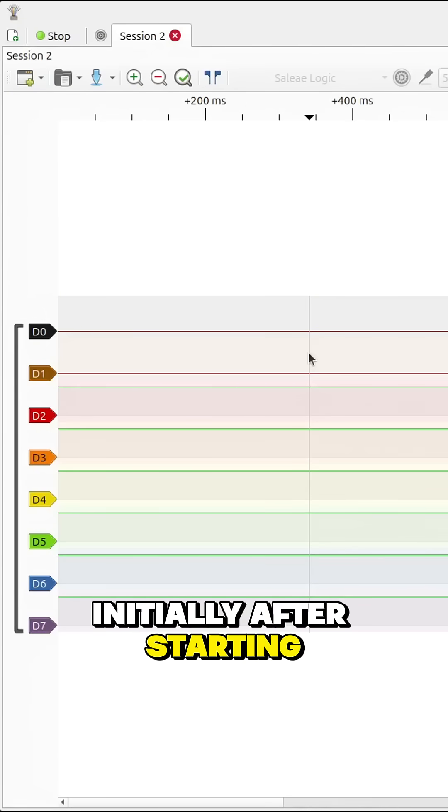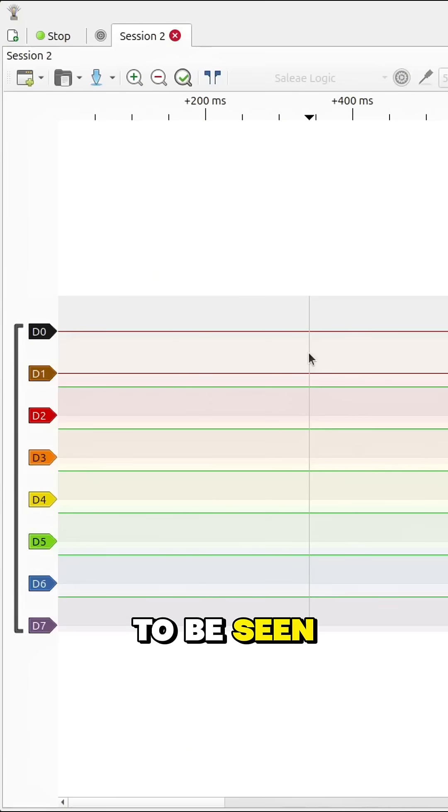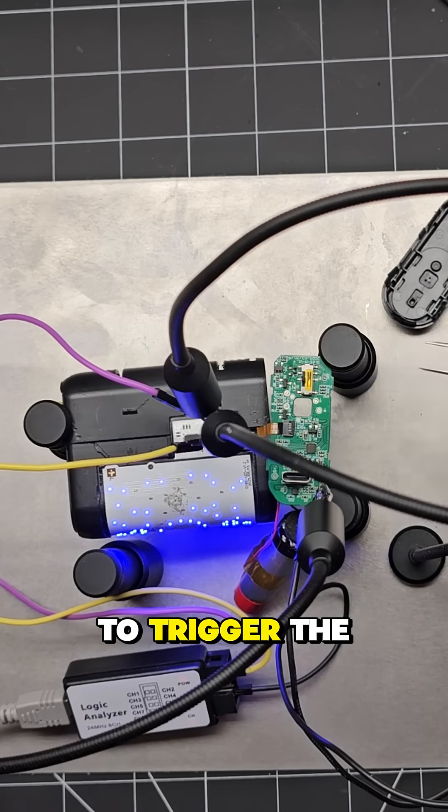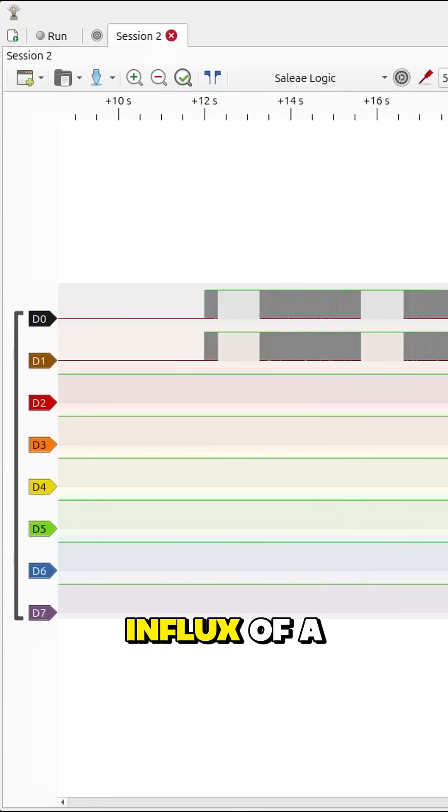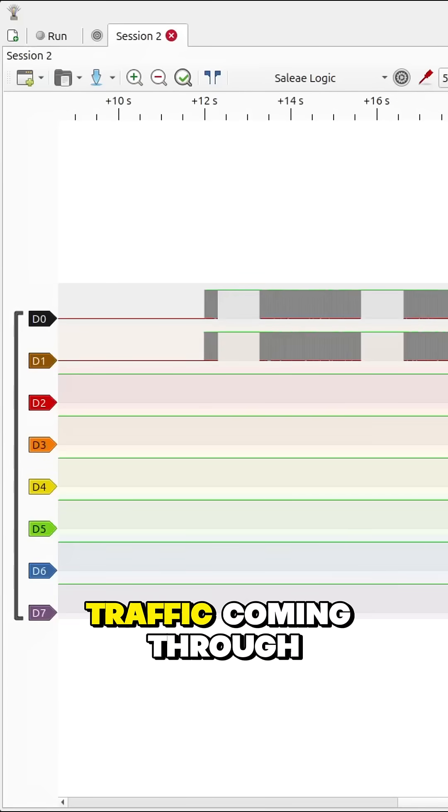Initially after starting the capture, there's no traffic to be seen. However, this is to be expected because those LEDs aren't actually on. Pushing the button to trigger the LED actually triggers an influx of a lot of I2C traffic coming through.